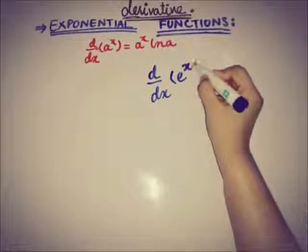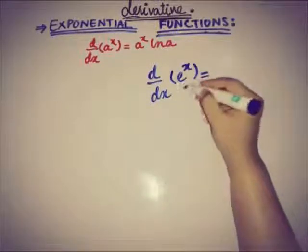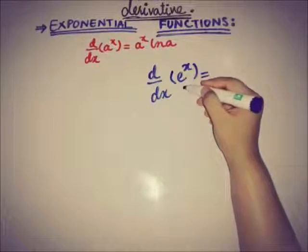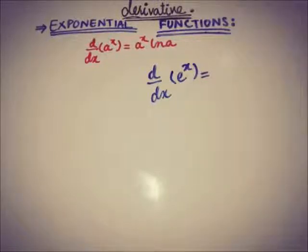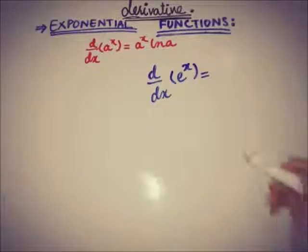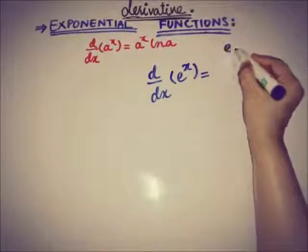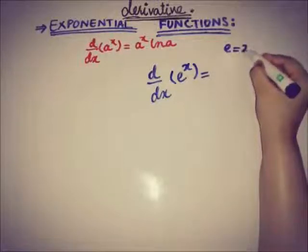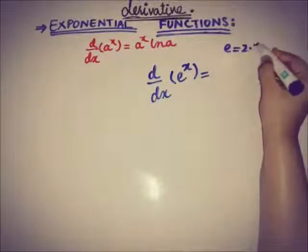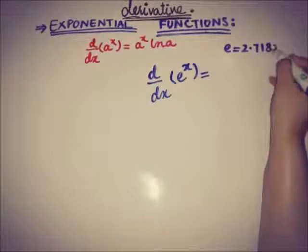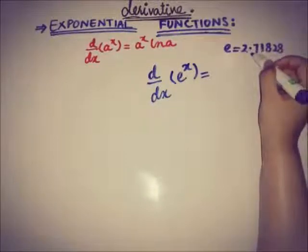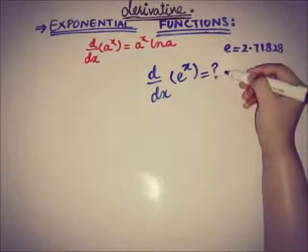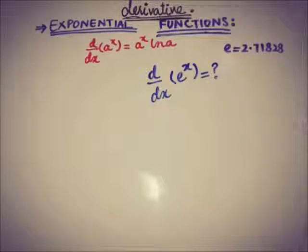Now we are going to talk about the rate of change of e to the power x, where e is sometimes known as Euler's number because of its importance. We are also familiar with the value of this constant — its value is approximately 2.7188.